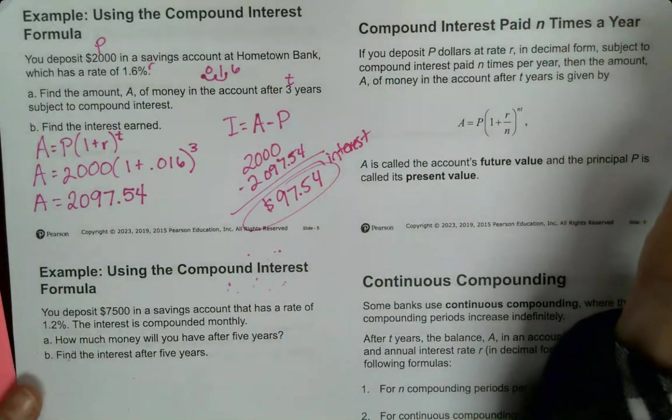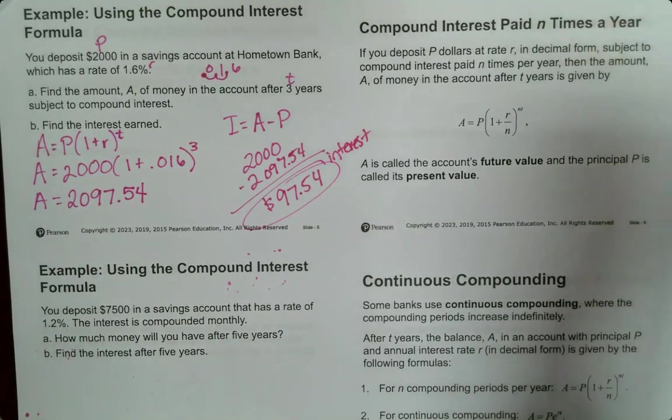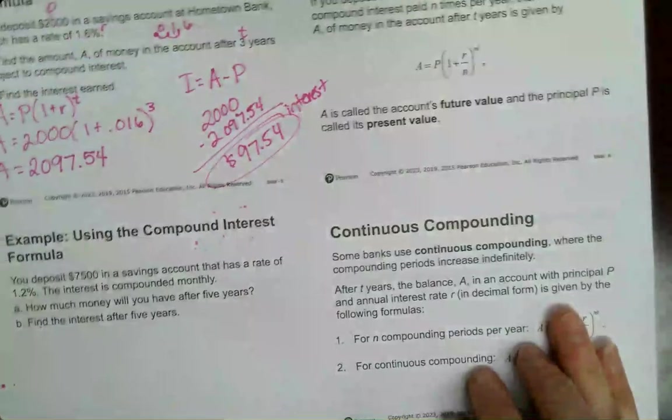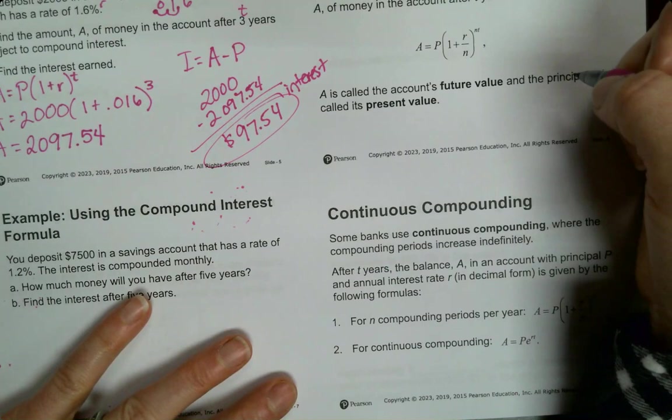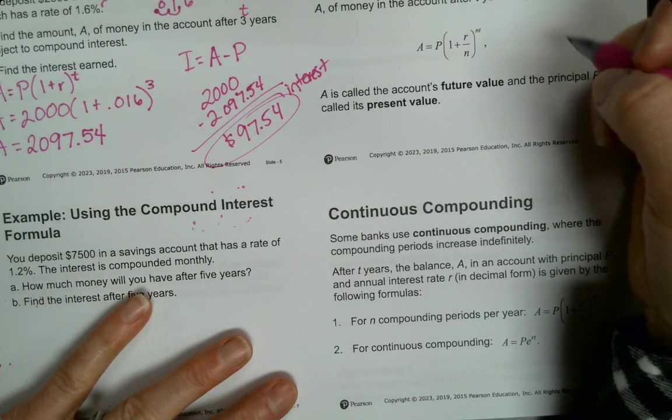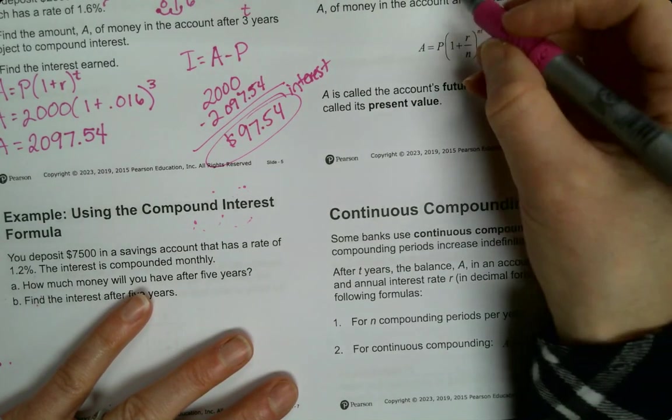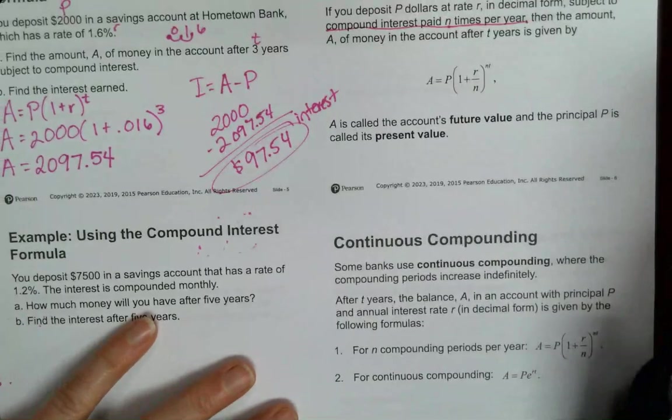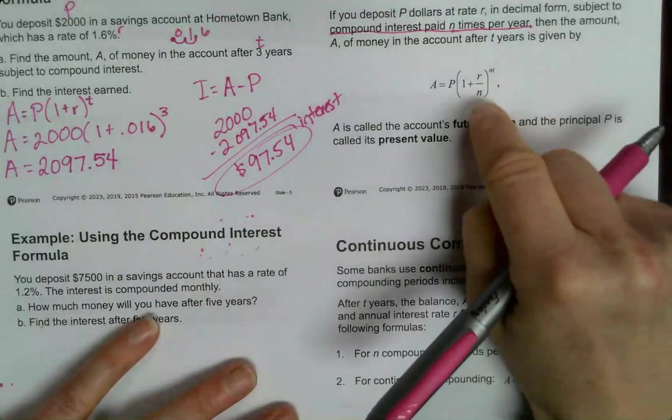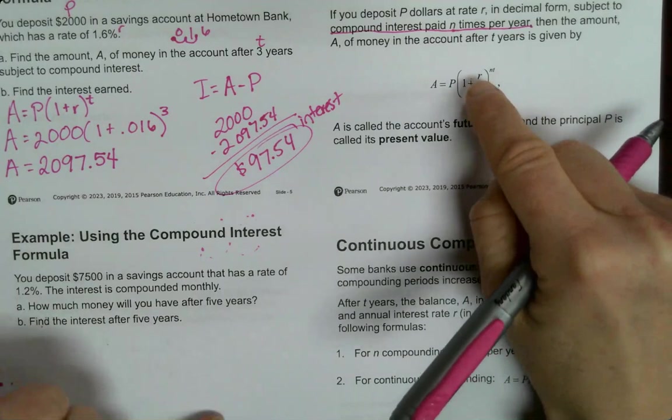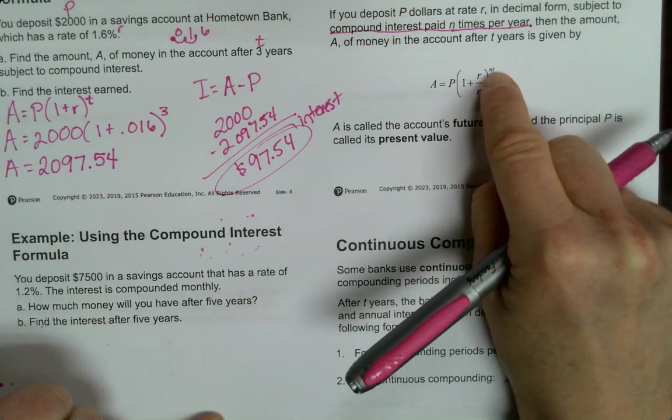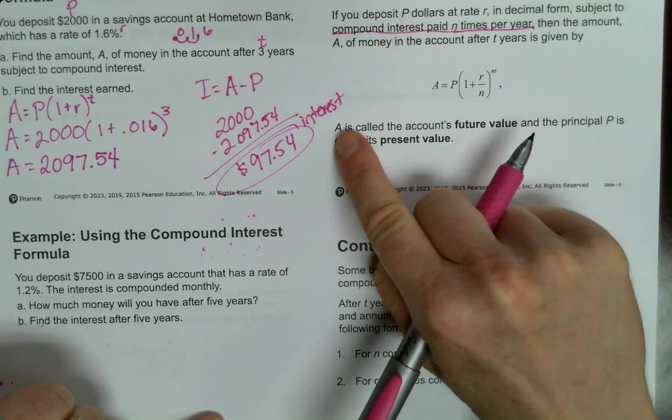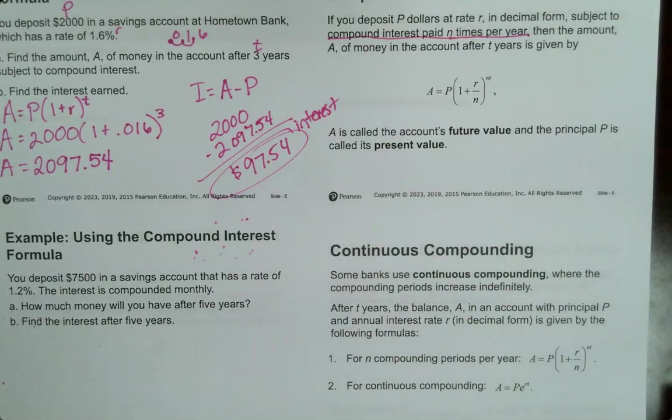Compound interest, so if it's just compounded once a year we would use this formula. But if it's compounded periodically then we need to know how many times it's compounded and that's going to be n. So n is how many times it's going to be compounded per year. Here's our formula. The only thing that we're changing is we're dividing the rate by n and then we're multiplying time by n.